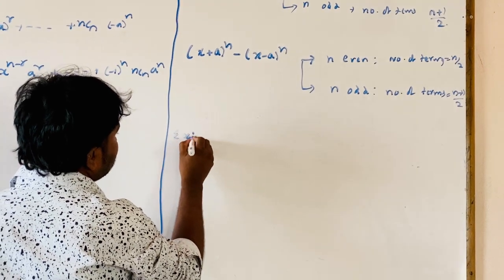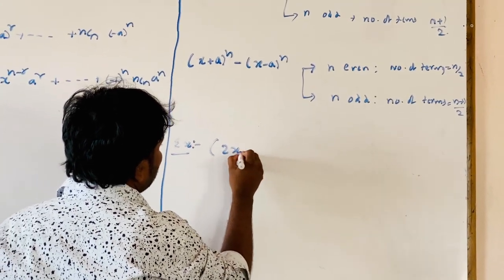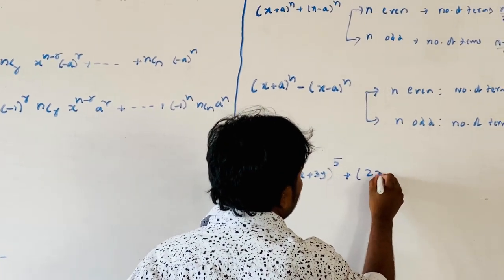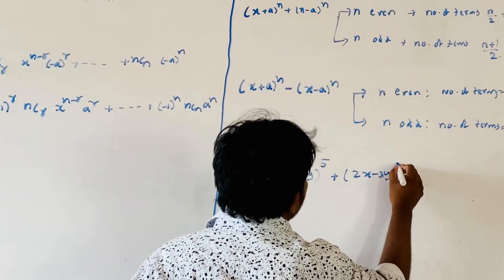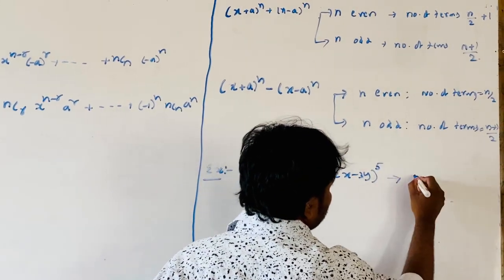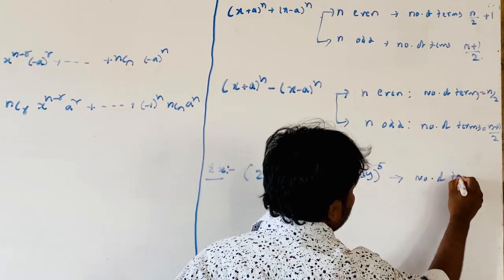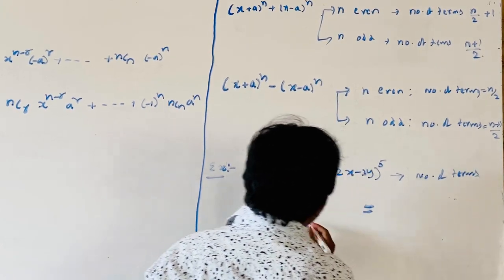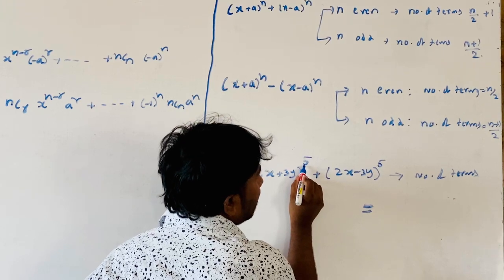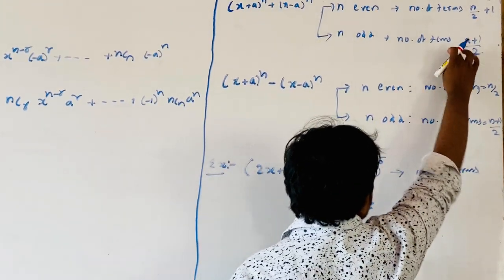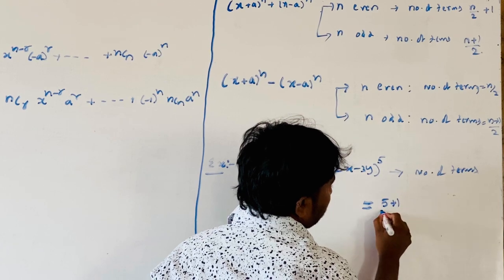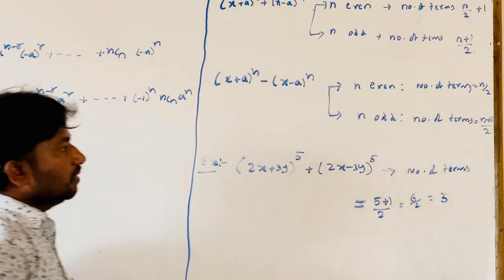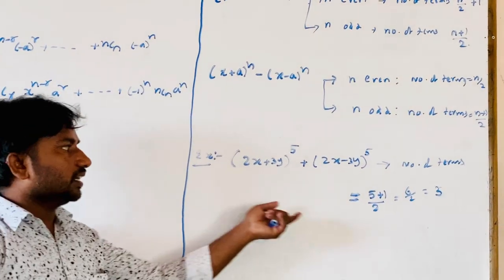For example: in the expansion of (2x + 3y)^5 plus (2x - 3y)^5, how many terms does it contain? Here n is 5, which is odd. So the number of terms is (n+1)/2 = (5+1)/2 = 6/2 = 3. The expansion contains 3 terms.